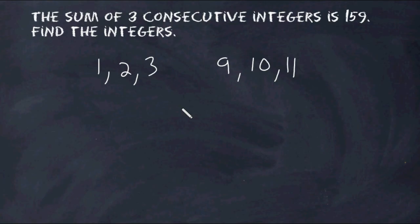Now we could just experiment and write three random consecutive integers and see if they total 159, but that might take quite a while. So what we're going to do is write an algebraic equation to represent the situation and then solve.